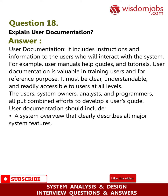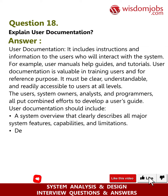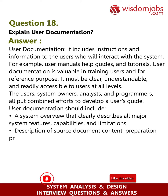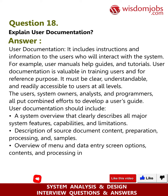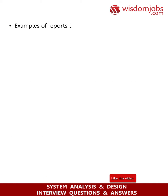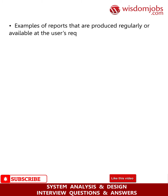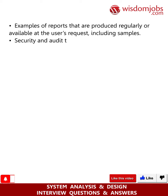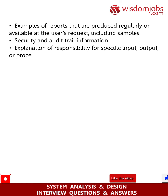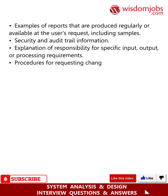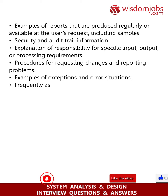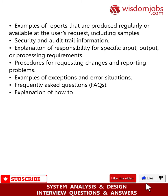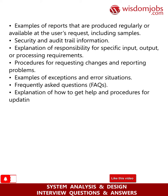User documentation should include: a system overview describing all major system features, capabilities, and limitations; description of source document content, preparation, processing, and samples; overview of menu and data entry screen options, contents, and processing instructions; examples of reports produced regularly or available at the user's request with samples; security and audit trail information; explanation of responsibility for specific input, output, or processing requirements; procedures for requesting changes and reporting problems; examples of exceptions and error situations; frequently asked questions (FAQs); and explanation of how to get help and procedures for updating the user manual.